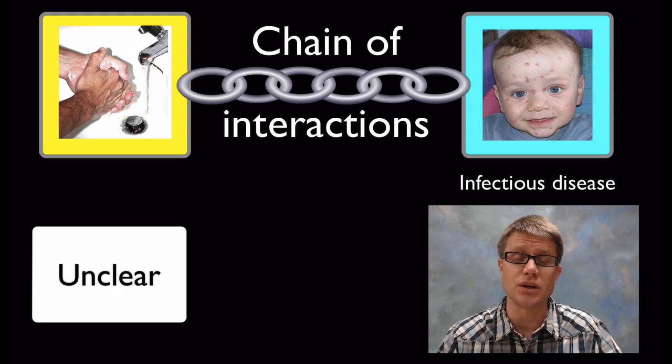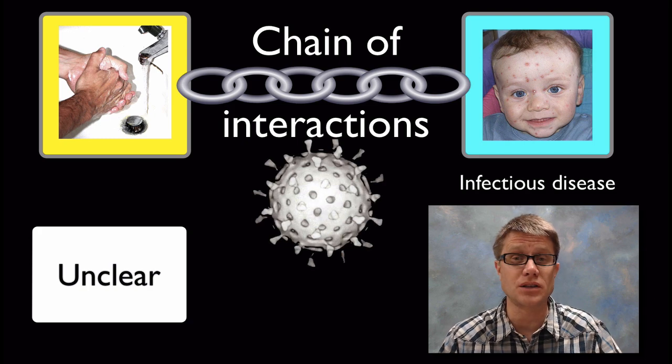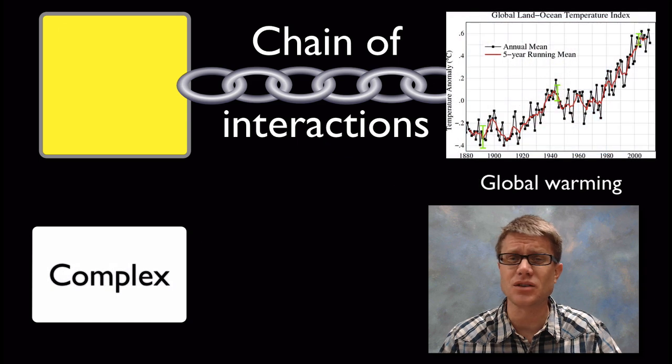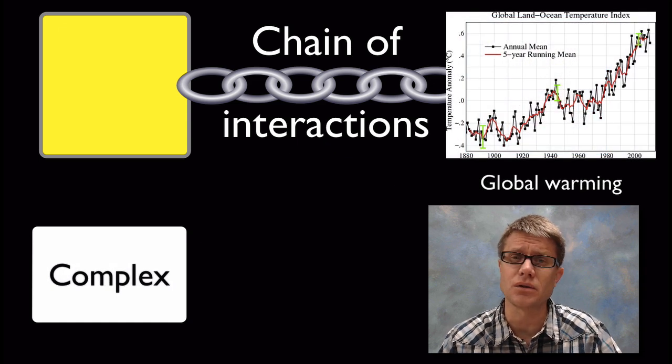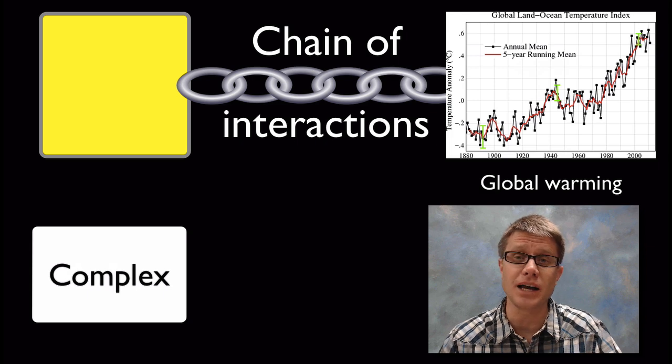Until we had studies where we could actually prove that or we could see the virus, see the bacteria, we really couldn't say that A causes B. Sometimes those causes are really complex, like if we look at an ecosystem or climate.